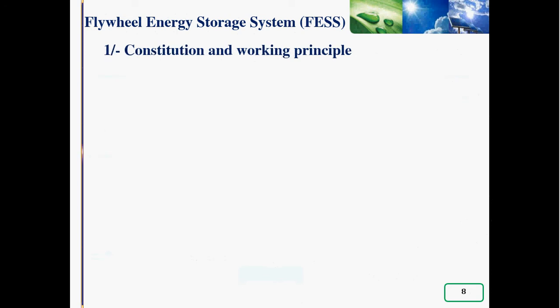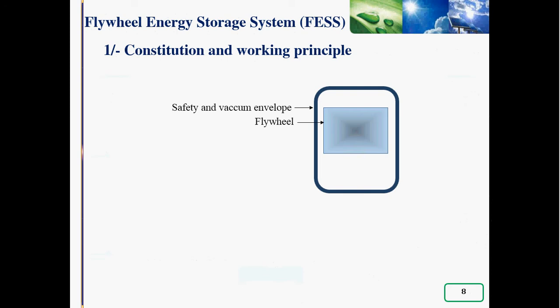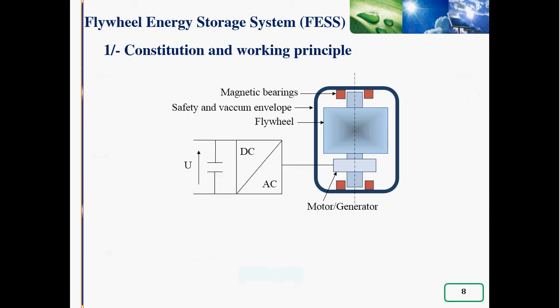The main component parts of the studied storage system is presented in this slide. The Flywheel Energy Storage System is surrounded by safety and vacuum envelope, in which a flywheel is coupled to a motor or a generator through a shaft. For avoiding friction, magnetic bearings are used. For control purpose, an inverter with a DC bus is provided.